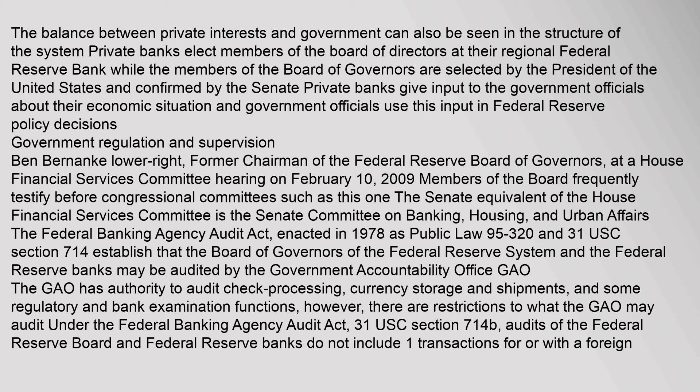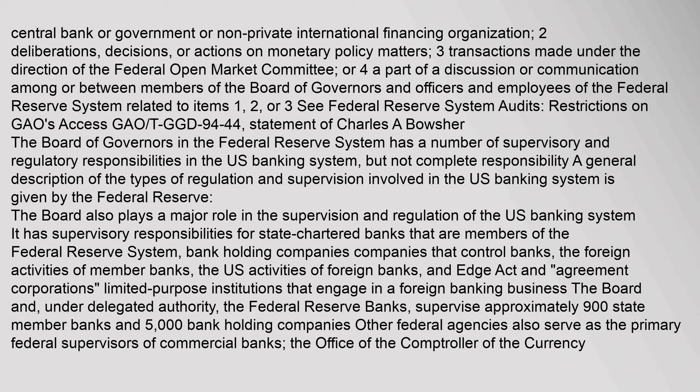Under 31 U.S.C. Section 714(b), audits of the Federal Reserve Board and Federal Reserve Banks do not include: (1) transactions for or with a foreign central bank or government or non-private international financing organization; (2) deliberations, decisions, or actions on monetary policy matters; (3) transactions made under the direction of the Federal Open Market Committee; or (4) discussions among or between members of the Board of Governors and officers and employees of the Federal Reserve System related to items 1, 2, or 3.